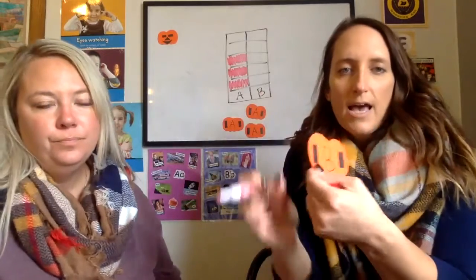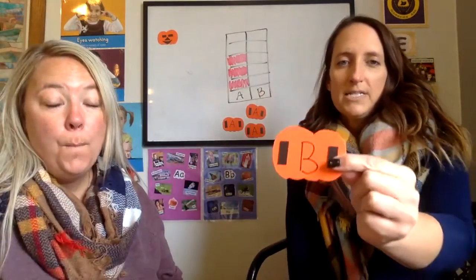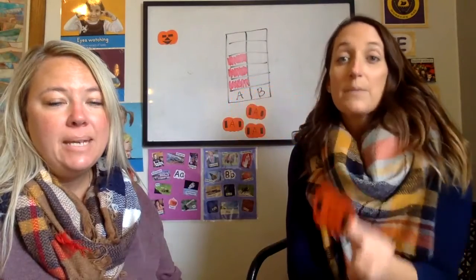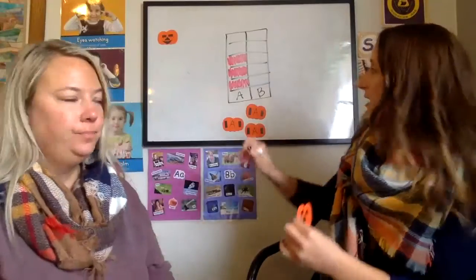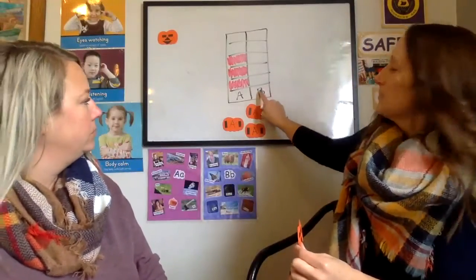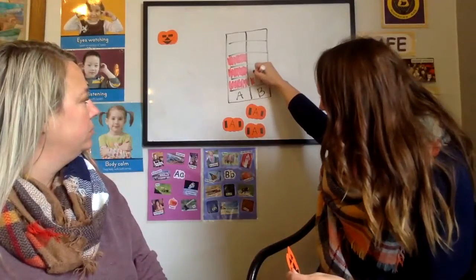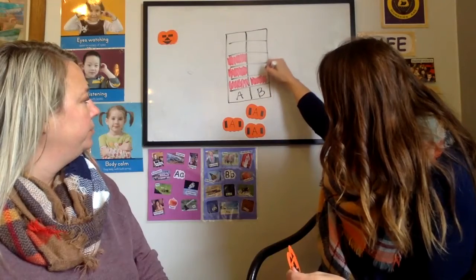How about this guy? What is that one? Do you remember what that letter is called? B, B, and B says B, B, B. So now I'm going to go over here to where my B is, and I'm going to color the box above the B. Okay.